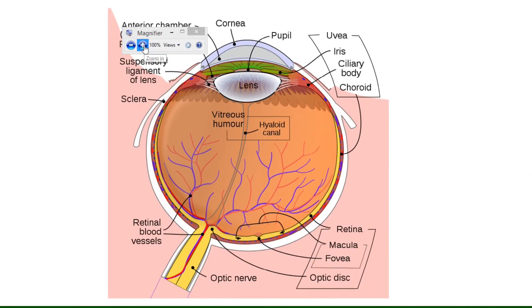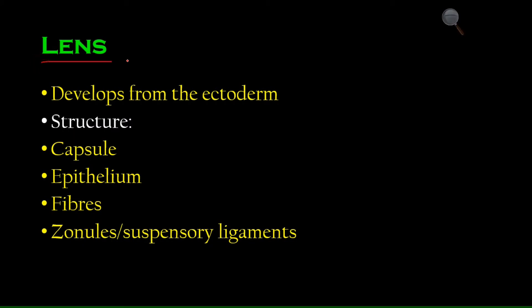The lens actually develops from the ectoderm — that's interesting to know. Other structures like the skin and the nervous system are also derived from the ectoderm, so it's good to know a little of its embryology. The structure of the lens includes a capsule on the outermost layer, then an epithelium, lens fibers, and suspensory ligaments.